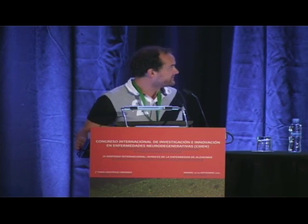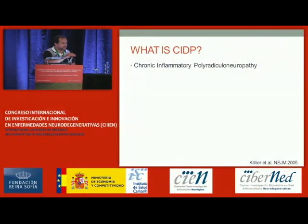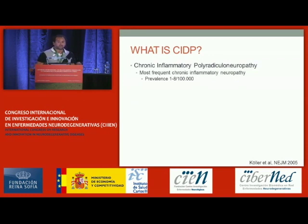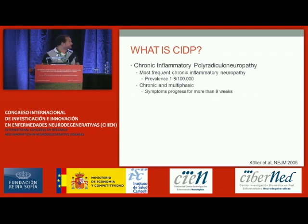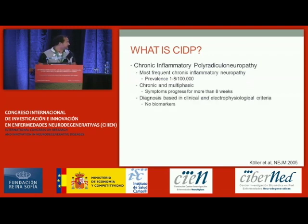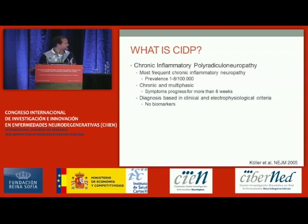What is CIDP? CIDP is the acronym of chronic inflammatory demyelinating polyradiculoneuropathy. It's the most frequent chronic inflammatory neuropathy, but it still is very rare. It's a disease that is chronic or multiphasic. Symptoms progress along eight weeks or more. Diagnosis is based on clinical and electrophysiological criteria, and there are no biomarkers so far that could help in diagnosis.